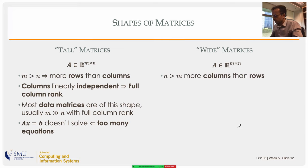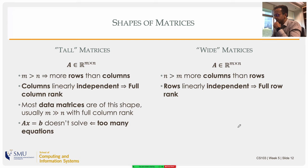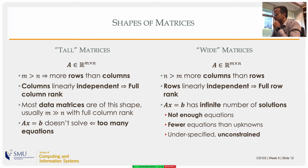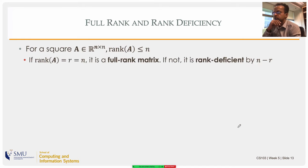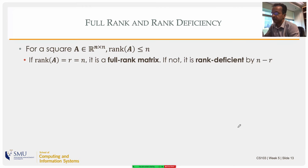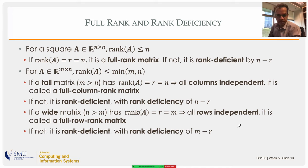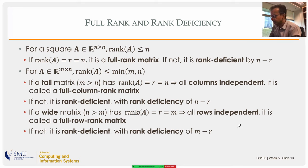If you think of a tall matrix as encoding a system of linear equations, you have too many equations and cannot solve it exactly — but you might ask for the best possible solution. A wide matrix has more columns than rows. If rows are linearly independent it's full row rank, and Ax = b has infinitely many solutions (fewer equations than unknowns — underconstrained). For a square matrix, full rank means rank equals the number of rows and columns; rank deficiency is the number of rows minus the actual rank.